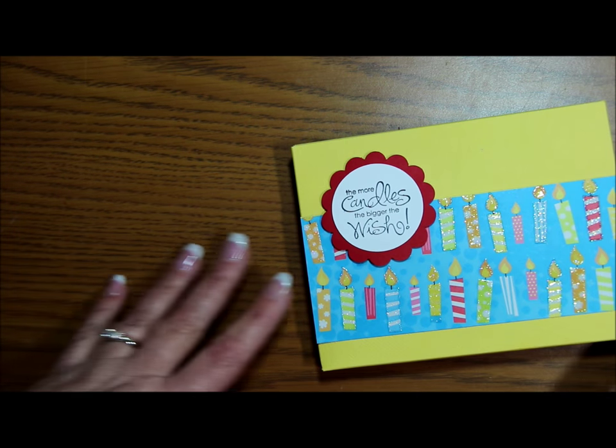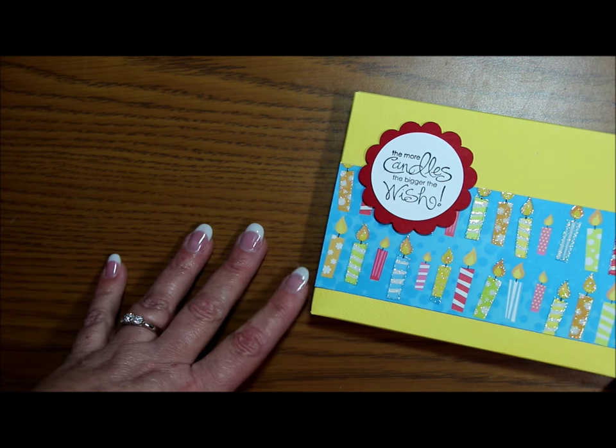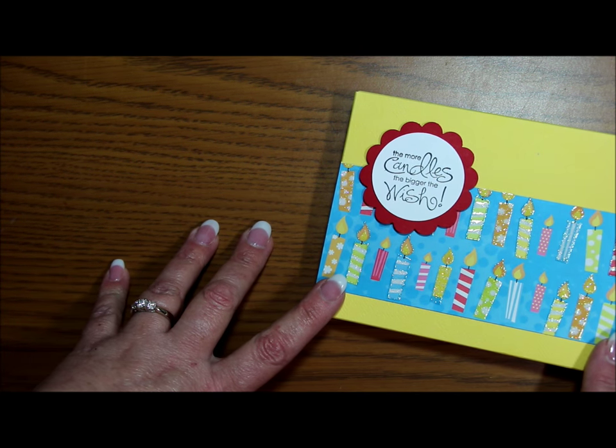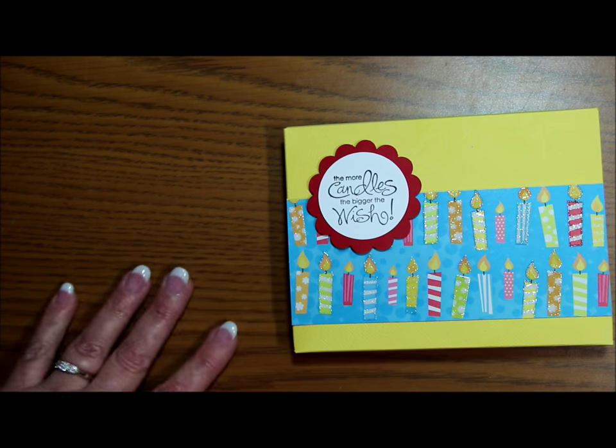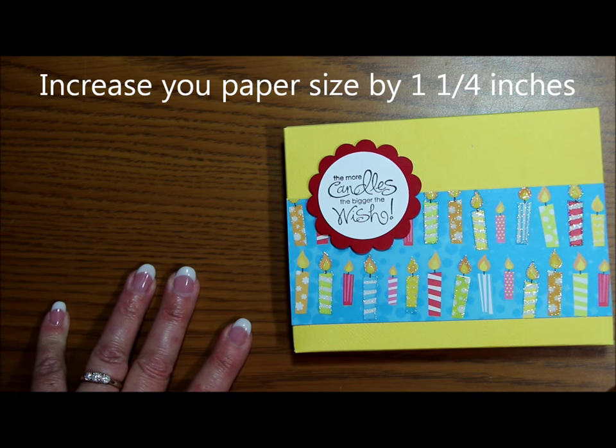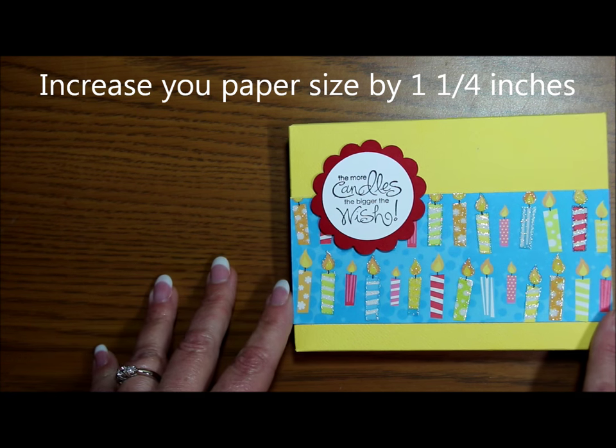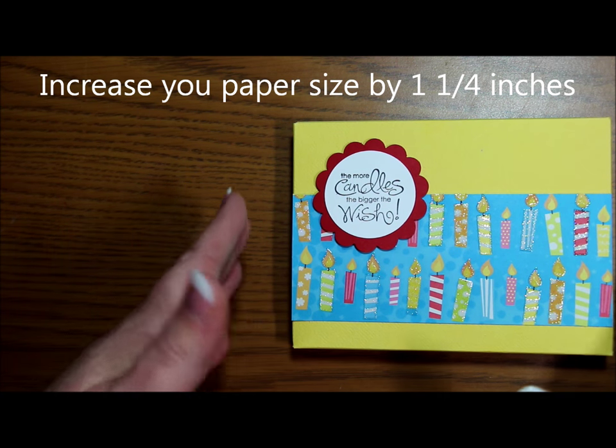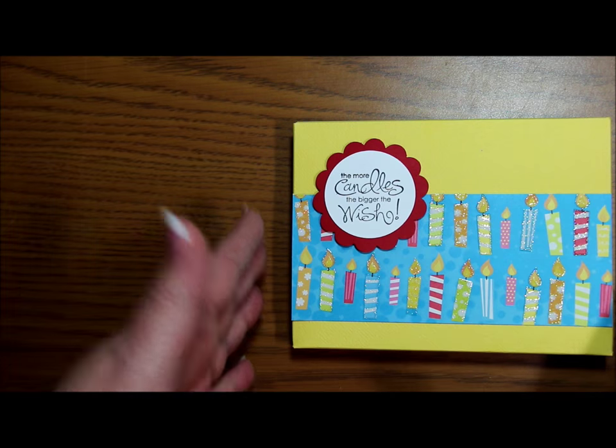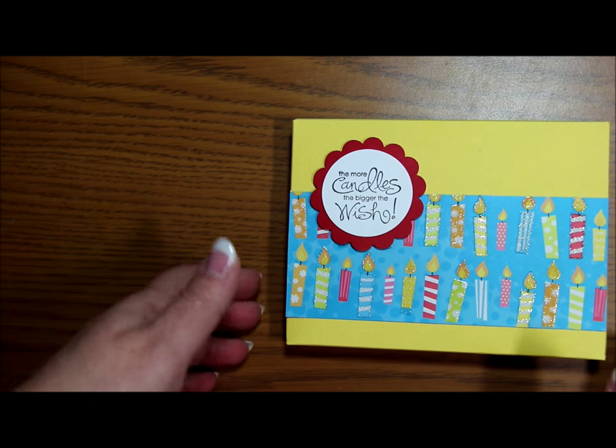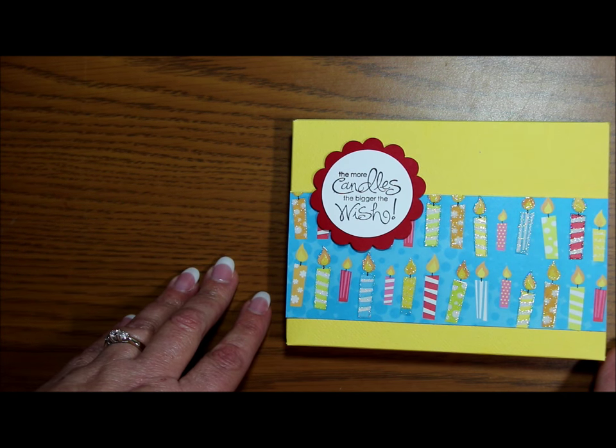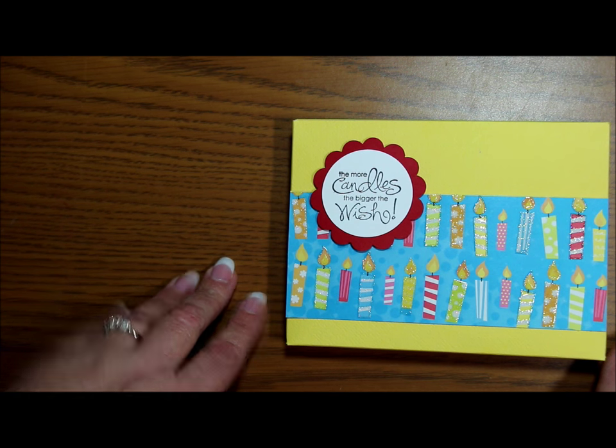Now I'm going to tell you, if you use your envelope punch board to create these boxes, there are really only three very simple rules that you need to remember. The first rule is you'll need to increase your paper size from the recommended size on your envelope punch board for the card that you're going to be putting in the box. You'll need to increase the size by one and a quarter inches. That's rule number one.